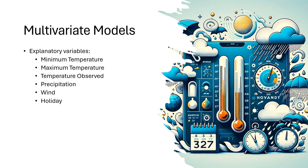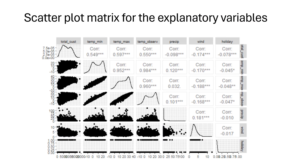Next we will look at models that can leverage our multivariate dataset, including information about temperature, precipitation, wind, and whether or not the day is a holiday. Before diving into the modeling results, let's give a brief EDA of these explanatory variables. In the top row we can see there is likely correlation between total customers and all of the explanatory variables, indicated by the three stars. We see a positive correlation between total customers and the three temperature metrics, meaning temperature increases are associated with more customers. We also see a negative correlation between total customers and precipitation and wind, meaning higher precipitation and wind are associated with fewer customers.